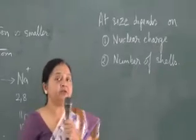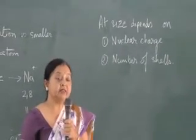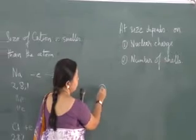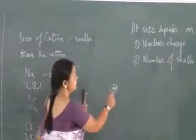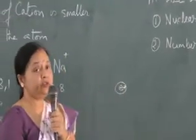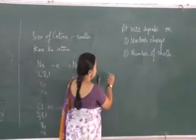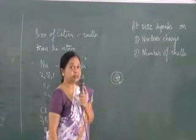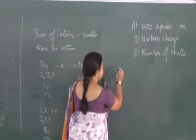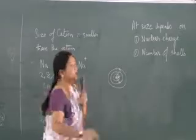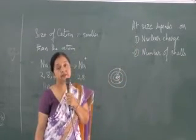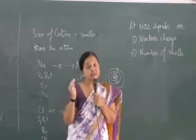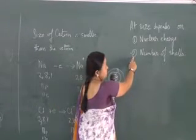Next is the number of shells — how does the number of shells affect atomic size? As the number of shells keeps on increasing, the size of the atom increases. The atomic radii is the distance from the nucleus to the outermost shell, that is the valence shell. If there is only a single shell, the atomic radii is small; if there are two shells, it is bigger; if there are three shells, still bigger. So: nuclear charge increases — size decreases; number of shells increases — size increases.